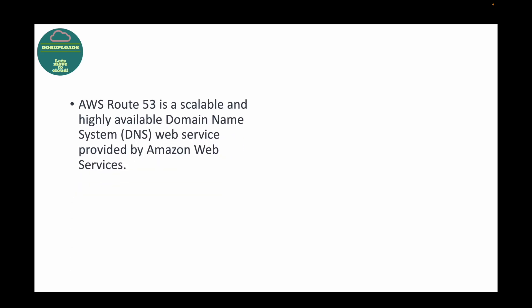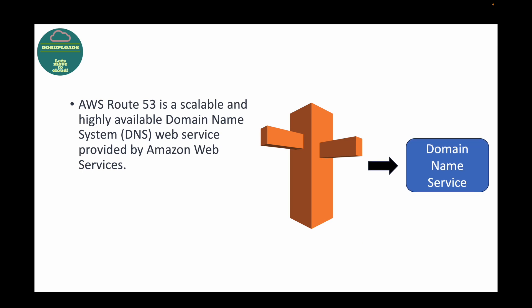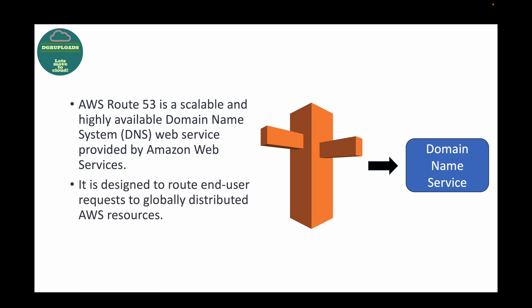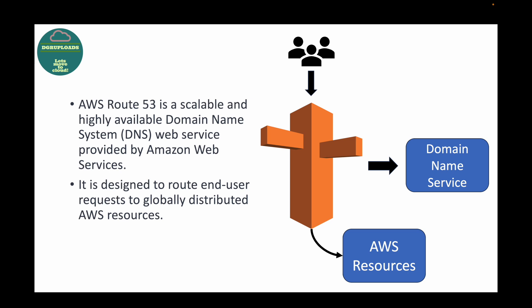Question 1: What is Route 53? Route 53 is simply the DNS service in AWS. It is a scalable and highly available service provided by AWS. It is designed to route end users' traffic — for example, when a user hits www.google.com, that request needs to be processed. Route 53 distributes the traffic to your AWS resources. If you are hosting an application on AWS, Route 53 routes user requests to the resources where that application is hosted.